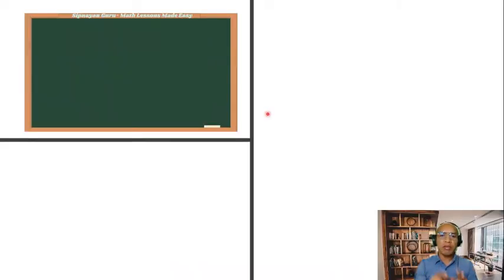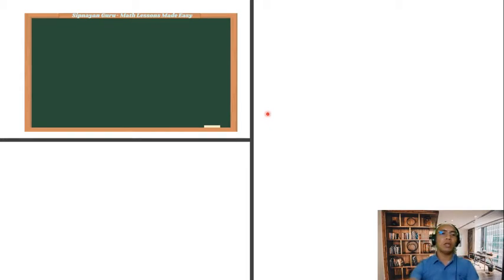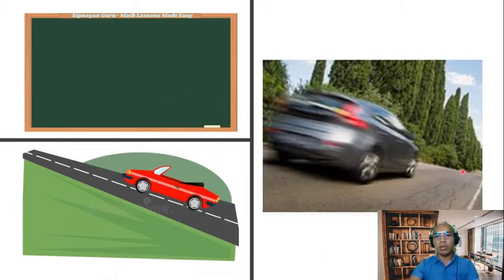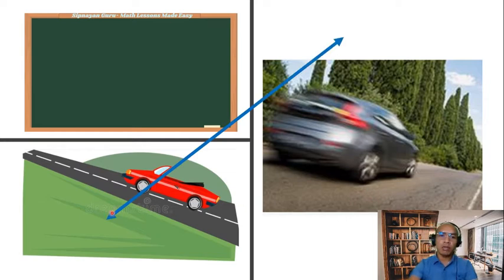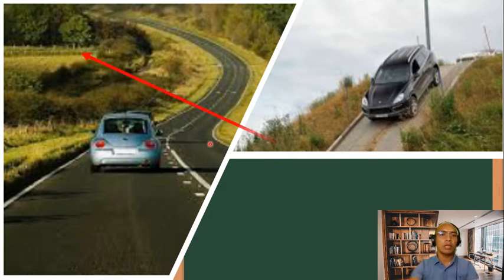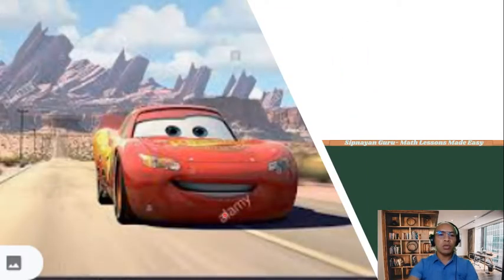Have you experienced driving or riding a car going uphill? Suppose this car is going up this kind of road. Which of the two cars has more trouble gaining speed? This can be illustrated by a line going up. What about going downhill? Suppose this kind of road — which road requires more braking in order to slow down your car? This can be illustrated by a line going down.